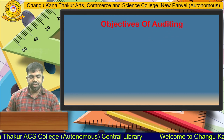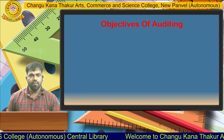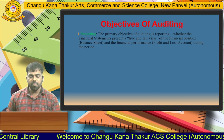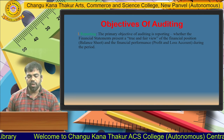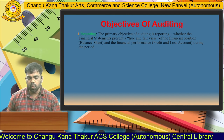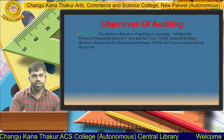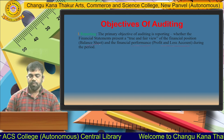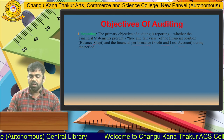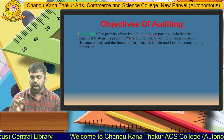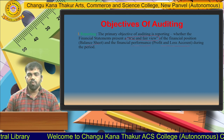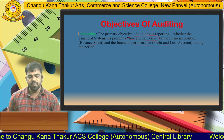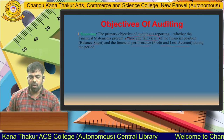Moving to the objectives of auditing, the first objective is reporting. The primary objective of auditing is reporting whether the financial statements present a true and fair view of the financial position — the balance sheet — and the financial performance — the profit and loss account — during that period. The audit report must present a true and fair view according to the auditor.